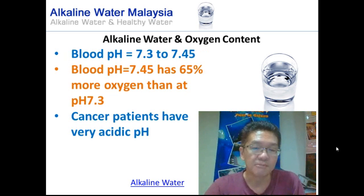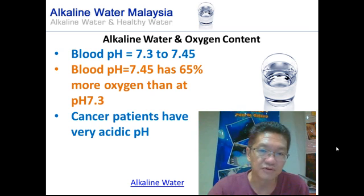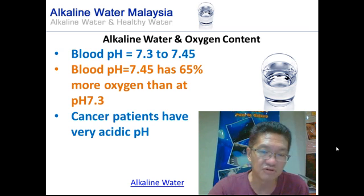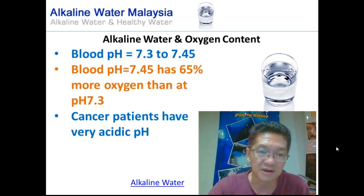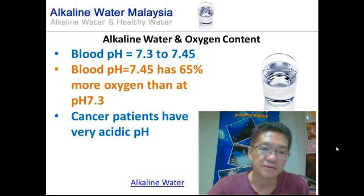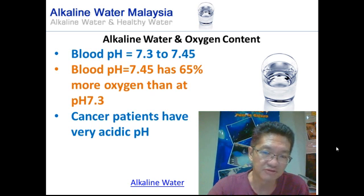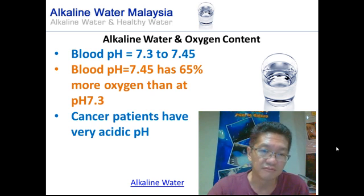For our blood, the pH actually ranges from 7.3 to 7.45. For a blood pH of 7.45, the oxygen content is 65% more than at a blood pH of 7.3. This implies that when the pH is very low, the oxygen content is also very low, and this is evidenced by the fact that cancer patients have very acidic pH.